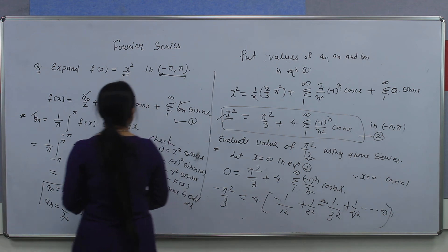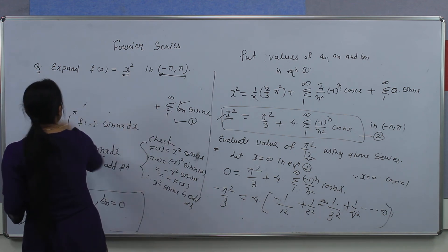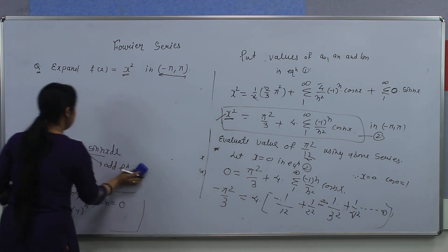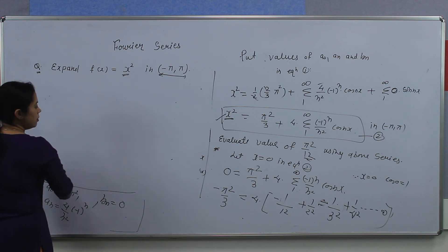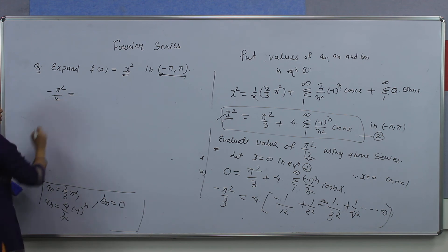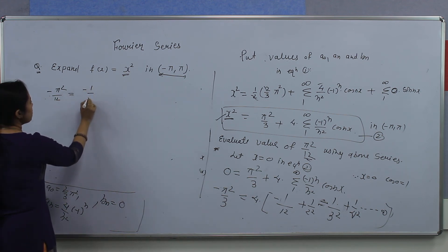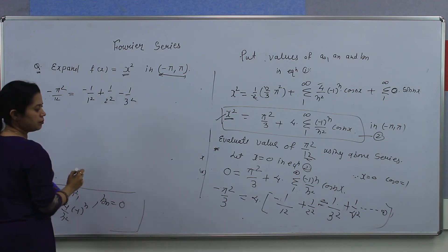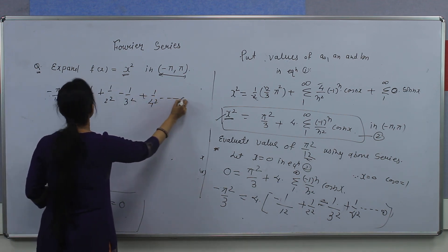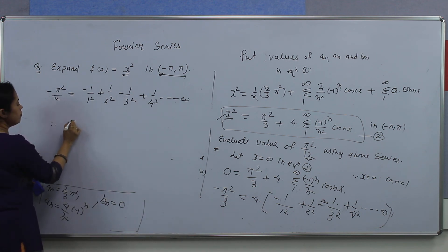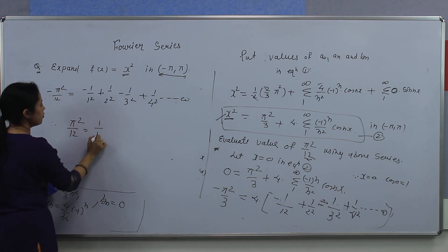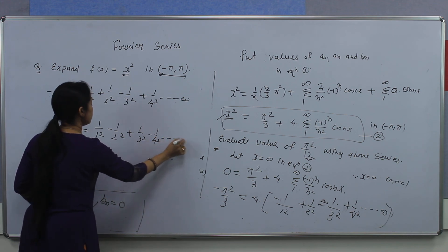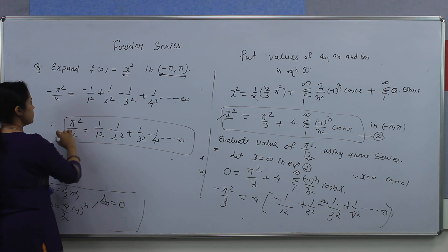Simplifying, minus 2π²/12 equals 4 times the bracket: minus 1 upon 1 squared plus 1 upon 2 squared minus 1 upon 3 squared plus 1 upon 4 squared and so on up to infinity. Therefore, the value of π²/12 equals 1 upon 1 squared minus 1 upon 2 squared plus 1 upon 3 squared minus 1 upon 4 squared and so on up to infinity. This is the value of π²/12.